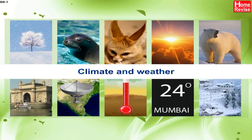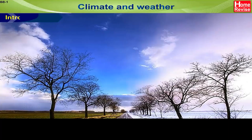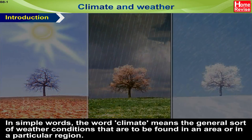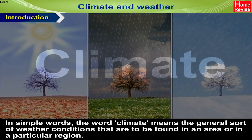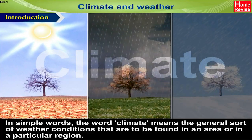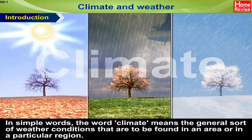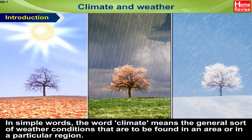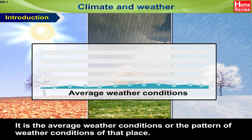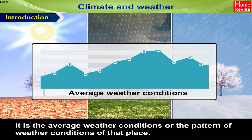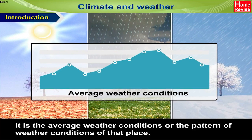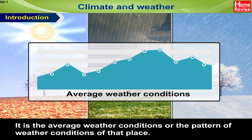Climate and Weather. Introduction: In simple words, the word climate means the general sort of weather conditions that are to be found in an area or in a particular region. It is the average weather conditions or the pattern of weather conditions of that place.